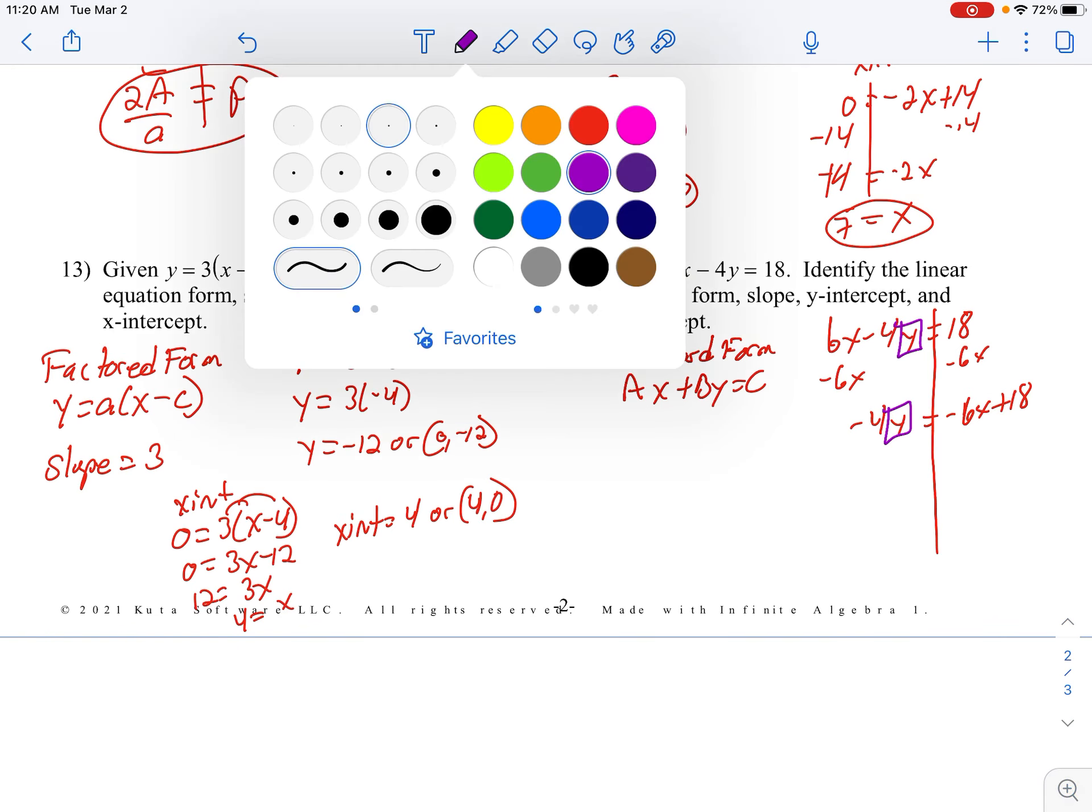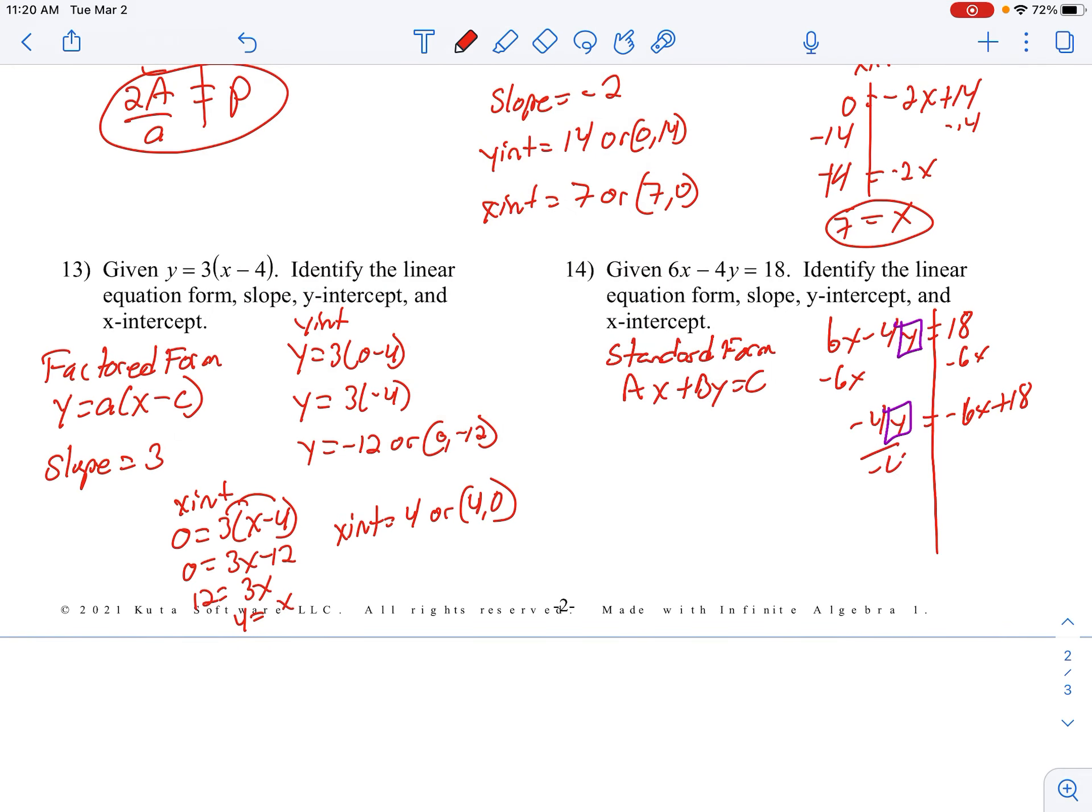So I want to get Y by itself, so I want to divide by negative 4. Everything gets divided by negative 4.